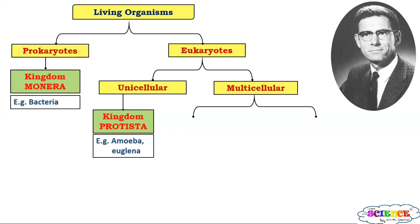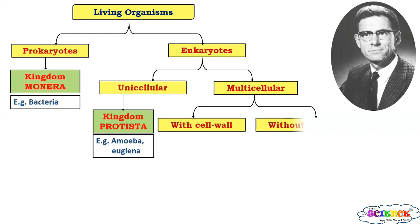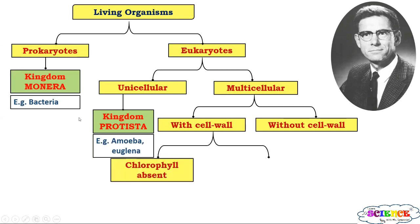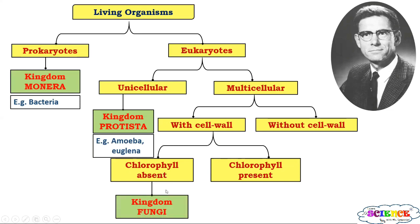Multicellular organisms were further classified on the basis of presence or absence of cell wall — with cell wall and without cell wall. This group with cell wall was further classified on the basis of whether chlorophyll is absent or present. If chlorophyll is absent, then it is placed in one kingdom and that kingdom is called Kingdom Fungi. So all non-green organisms with a cell wall, eukaryotic and multicellular, were grouped in Kingdom Fungi, which includes all mushrooms and molds.